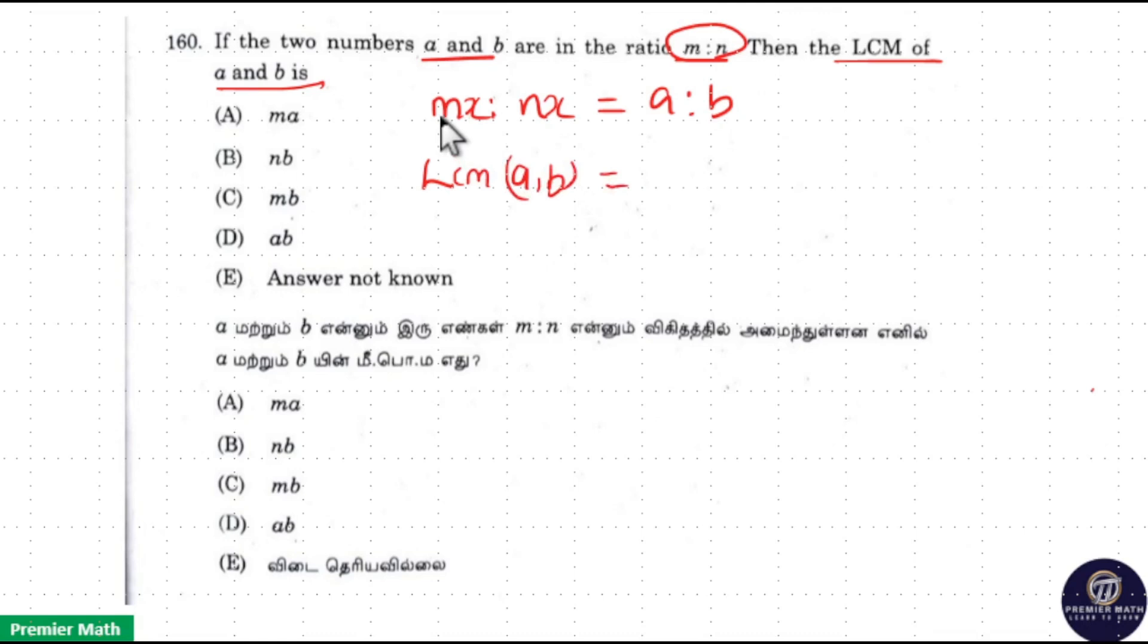equal to M into N should be in the LCM, and here from 2x I can take 1x. So MNx is the LCM of AB, and here N into X is equal to B. So it can be written as Mb. LCM of AB can be written as